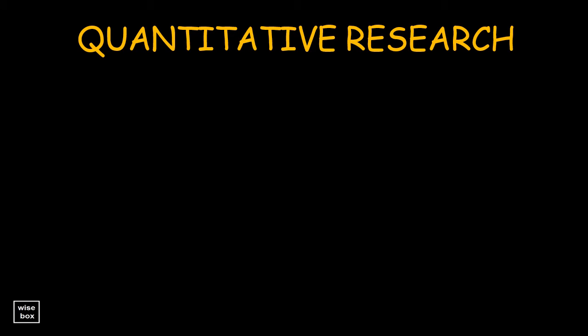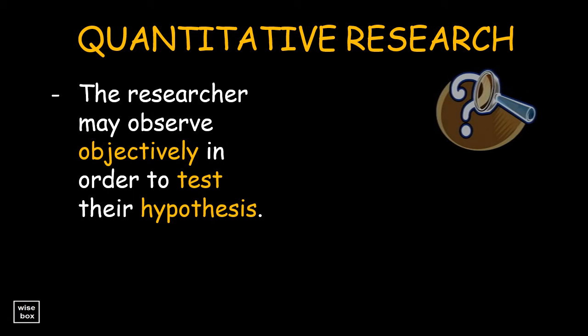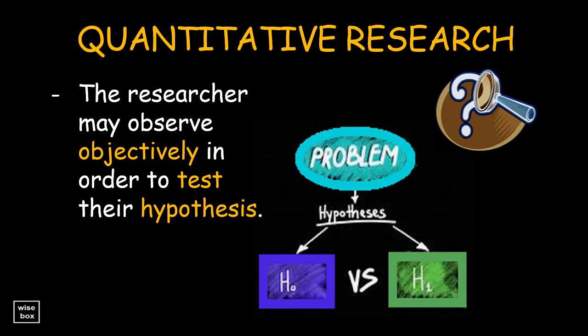Also, in quantitative methods, the researcher may observe objectively in order to prove or test their hypothesis. This confirmation is usually done through experimentation or correlation studies.